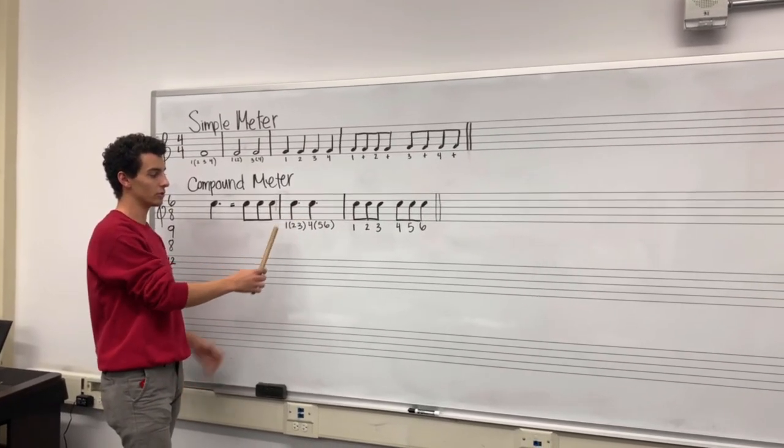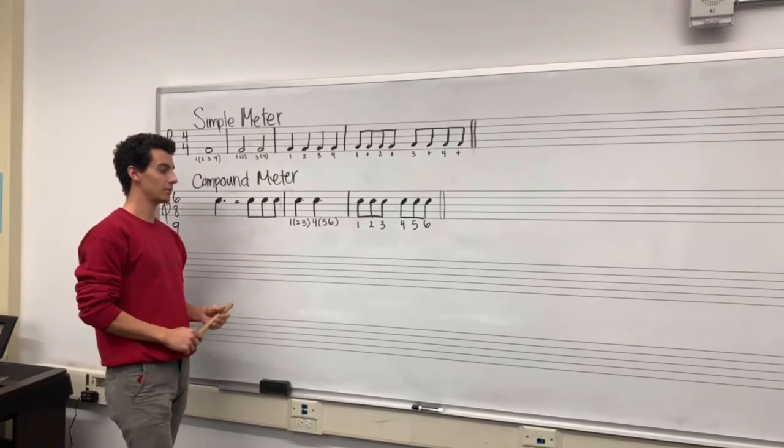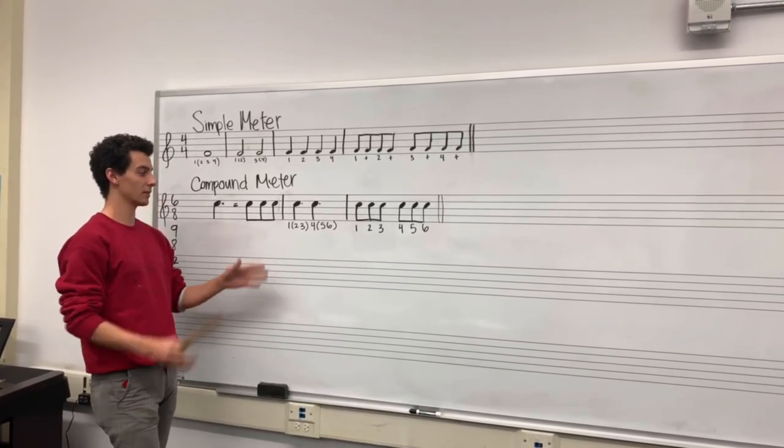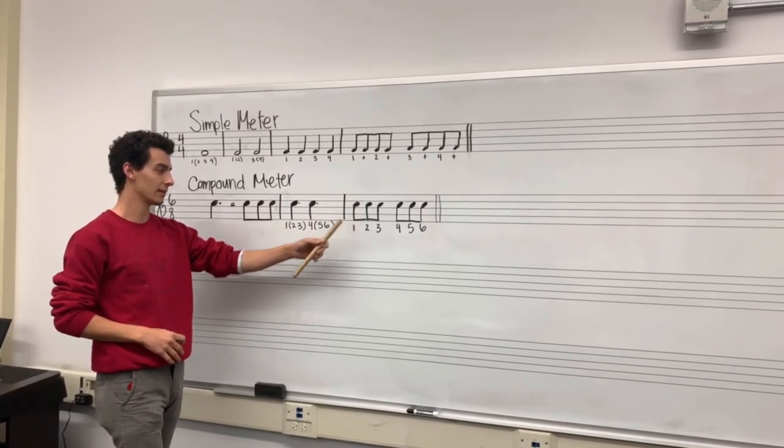If you break it down, if you just do two beats, they would beat on one and four. So we count one, two, three, four, five, six, one, four. One, two, three, four, five, six. And that's how you break it down.